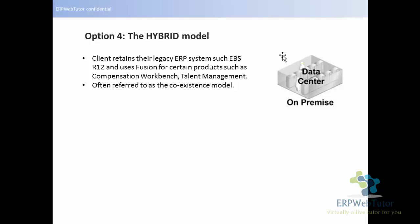So those are the four different models. The most preferred are the private cloud — where someone is hosting — and the hybrid model. The hybrid model is also an implementation option where you can have your EBS on-premise and your Fusion compensation on the cloud. If you have any questions, we will definitely help you learn Fusion. We have just started creating content on Fusion and will continue to create more videos. Thanks for watching — visit us at www.erpwebtutor.com.